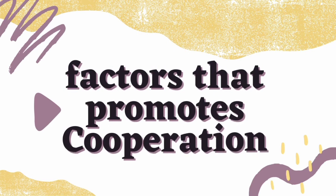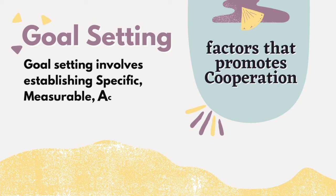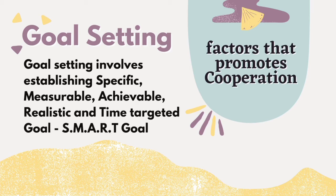What are the factors that promote cooperation? Number one factor is setting clear goals. Goal setting is very important for cooperation to take place and be more effective. Goal setting involves establishing specific, measurable, achievable, realistic, and time-targeted goals. If every member of the group knows the goal and the aim of that group, it will improve the cooperation among them.